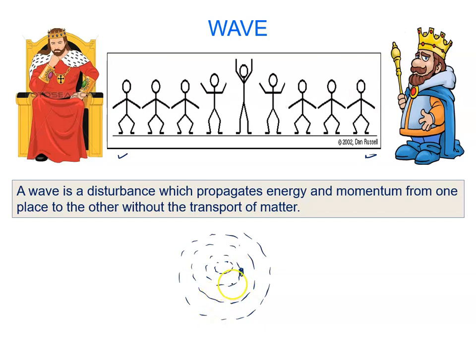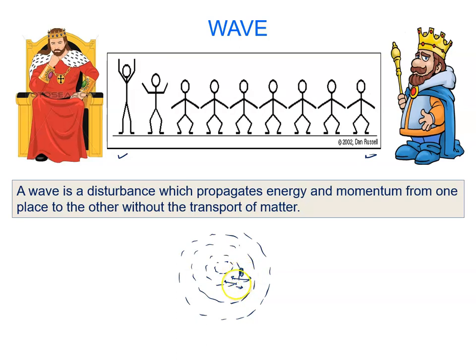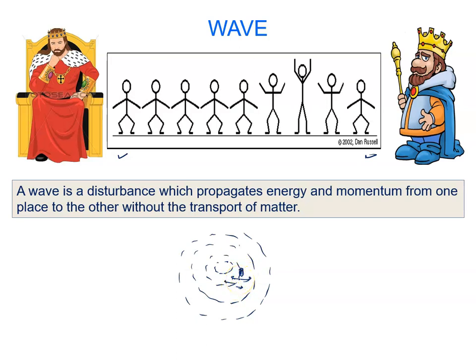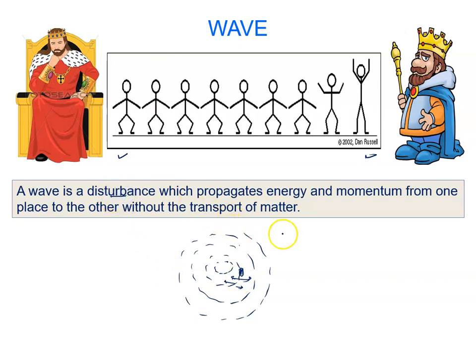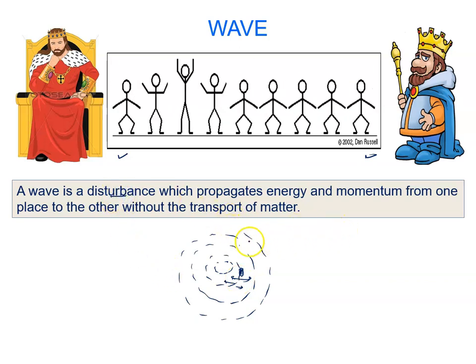It means that medium particles cannot dislocate their respective position. They only can excite or vibrate. So wave is a disturbance which propagates energy and momentum from one place to other without the transfer of matter. Matter cannot move.